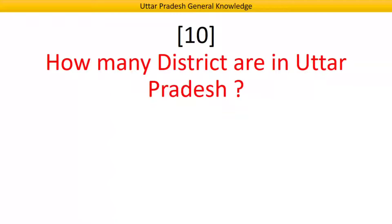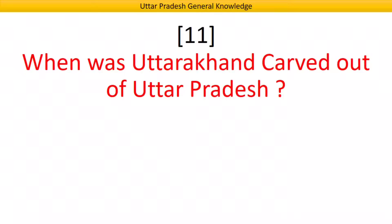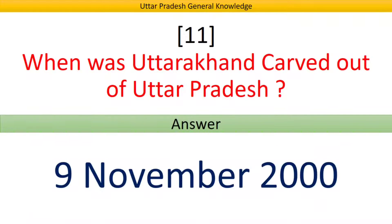How many districts are in Uttar Pradesh? Answer: 75 districts. When was Uttarakhand carved out of Uttar Pradesh? Answer: 9 November 2000.